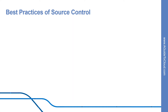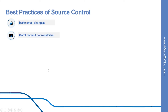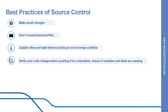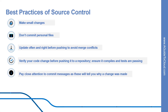Now let's look at some of the best practices for source control. The first one is to make small changes — in other words, commit early and commit often. Of course, be careful not to commit any unfinished work that could break the build. The second best practice is don't commit personal files, such as application settings or SSH keys, which are often committed accidentally but cause problems later when other team members are working on the same code. Third, update often and rebase before pushing to avoid merge conflicts. Another best practice is to verify your code changes before pushing to a repository — ensure it compiles and tests are passing.